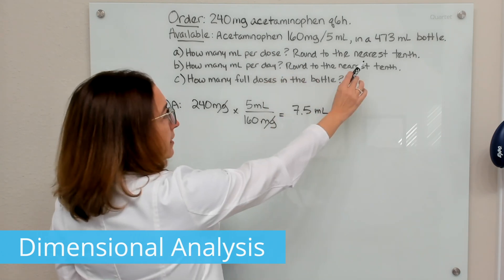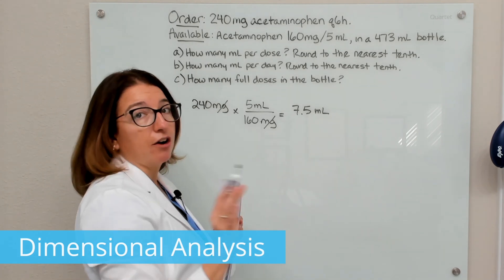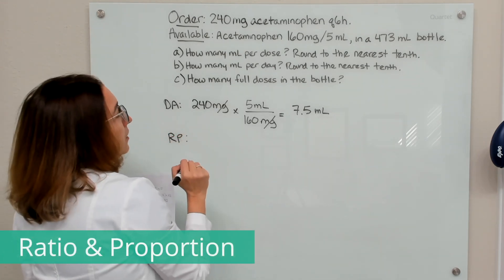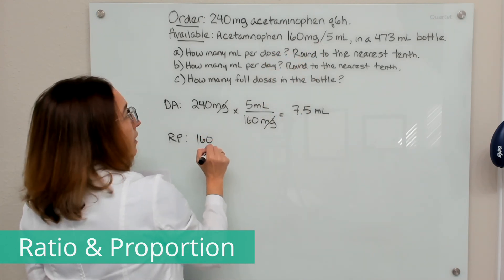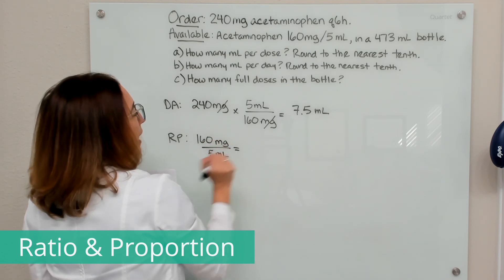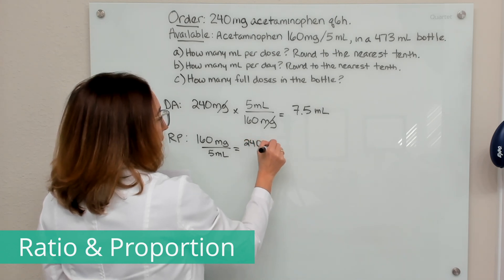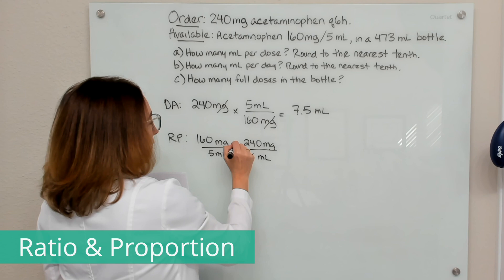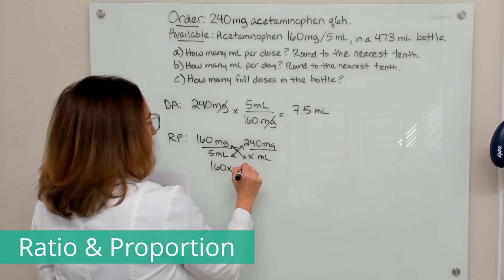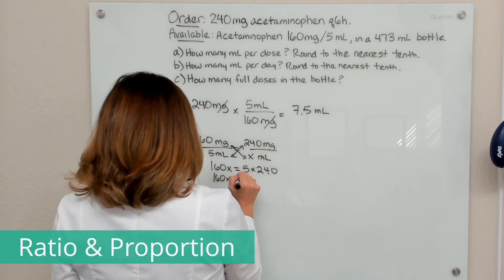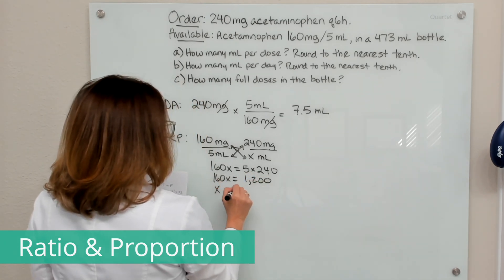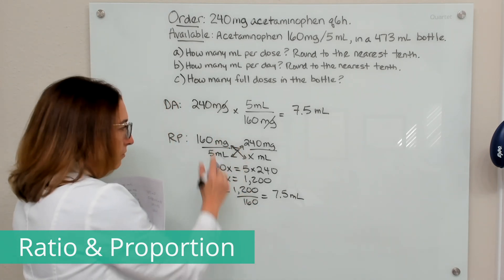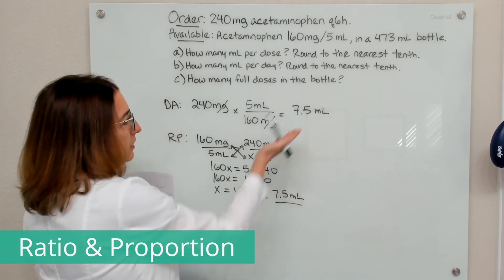The instruction said to round to the nearest tenth, and 7.5 is already to the nearest tenth, so we're good. Now let's solve the same problem using ratio and proportion. We put our known ratio — 160 milligrams in 5 ml — and set up 240 milligrams over x milliliters as the unknown. Cross-multiplying gives 160x equals 5 times 240, so 160x equals 1,200, and x equals 1,200 divided by 160, which is 7.5 ml — the same answer.